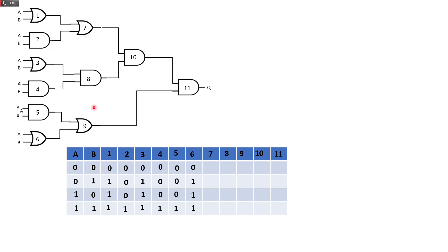For gate 7, we no longer base on A and B. Gate 7's inputs come from gates 1 and 2. It is an OR gate. So: 0 or 0 is 0, 1 or 0 is 1, 1 or 0 is 1, and 1 or 1 is still 1. Gate 8 is based on gates 3 and 4 — it is an AND gate. So: 0 and 0 is 0, 1 and 0 is 0, 1 and 0 is 0, and 1 and 1 is 1.